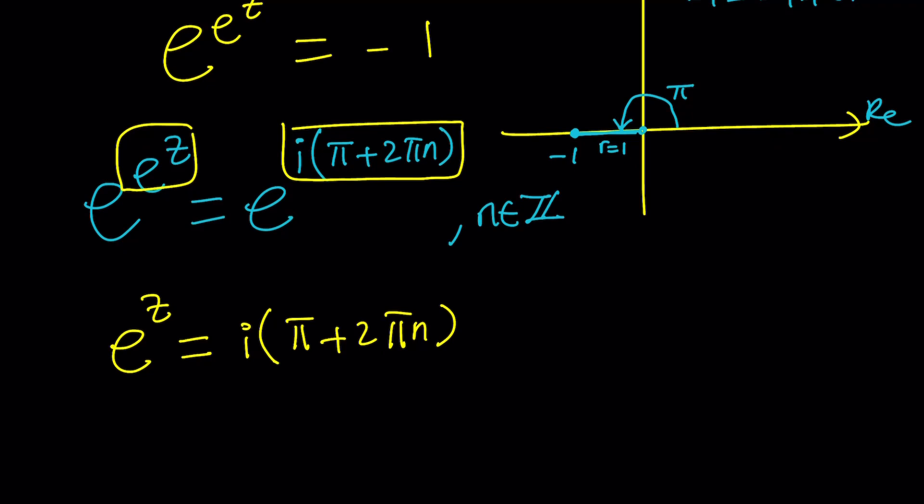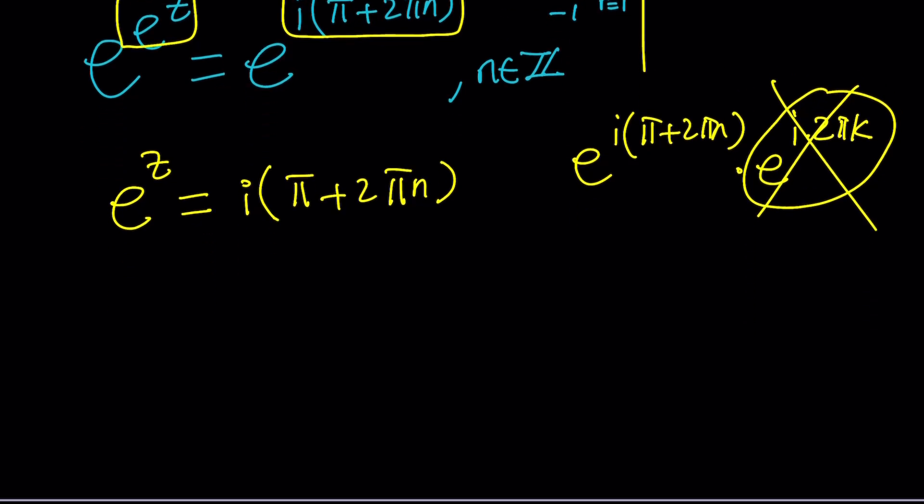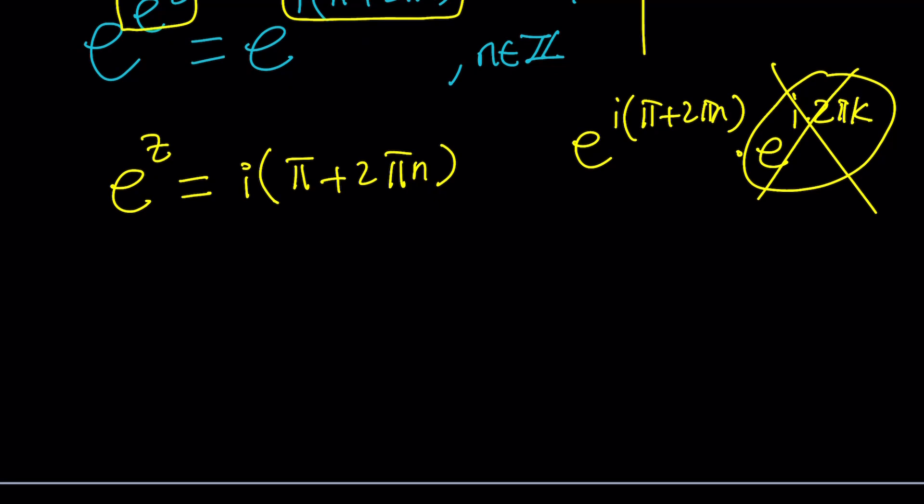Here's the thing, though. On the right-hand side, we could write this as E to the power I times pi plus 2 pi n times 1, which is E to the power I times 2 pi k. This is equivalent to 1, where k is an integer, and k don't have to be the same. So, when you do the natural log, you are going to have an additional I times 2 pi k. But guess what? Adding another multiple of 2 pi to this is not going to make a difference, so we don't really have to worry about it.